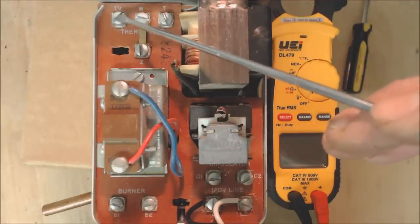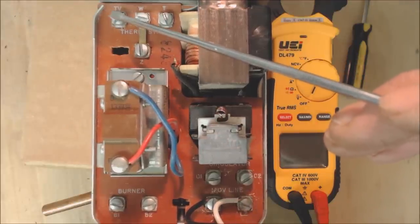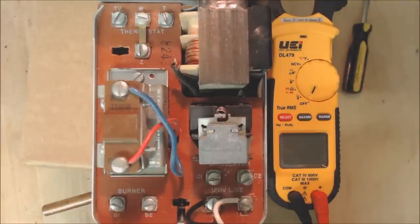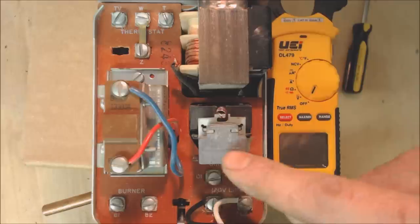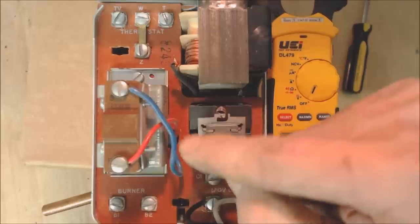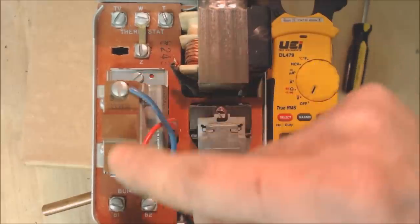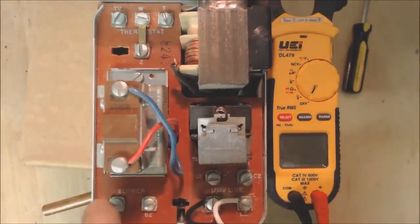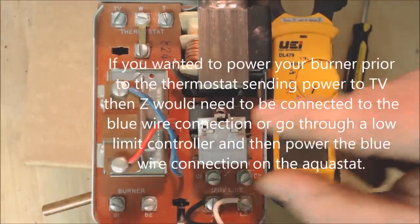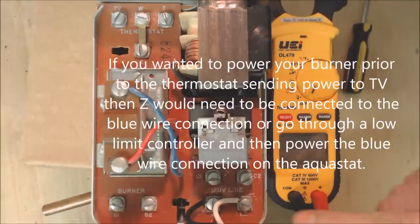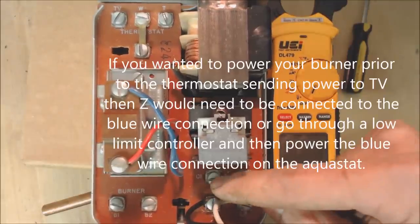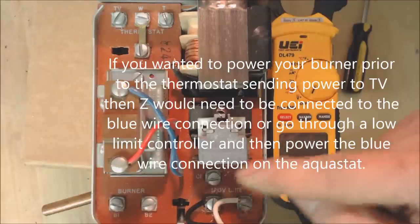When your thermostat calls for heat, it connects back over to the TV. When that happens, you're sending voltage to the coil on this relay and it sucks this down. It allows 24 volts over to here, comes across here and powers your burner. At the same time, it's turning your circulating pump on with the other part. It's connecting here and sending 120 volts from L1 over to C1, powering your circulating pump.